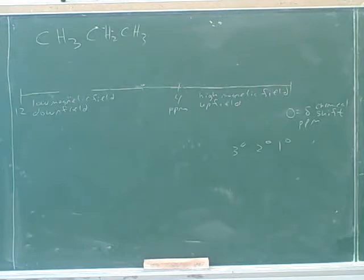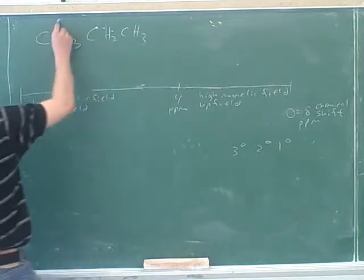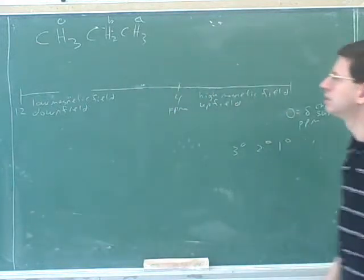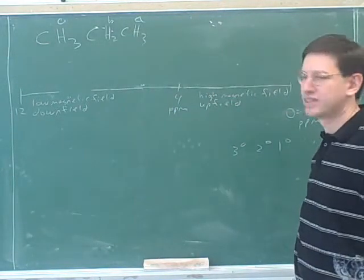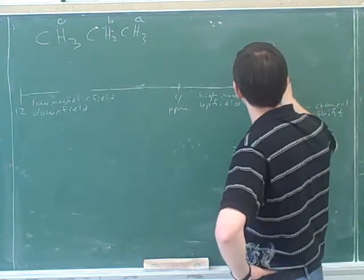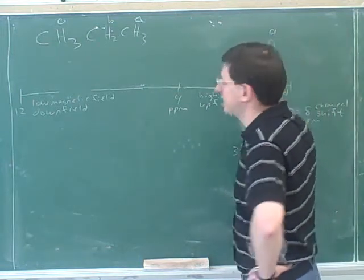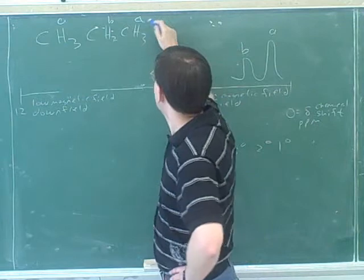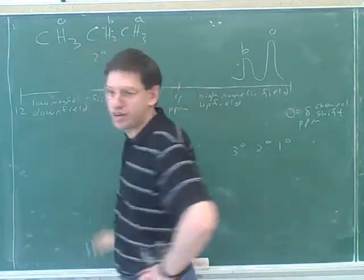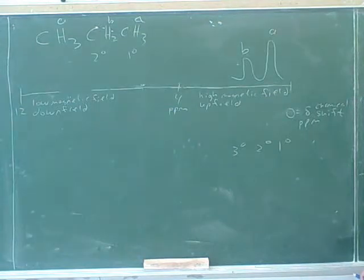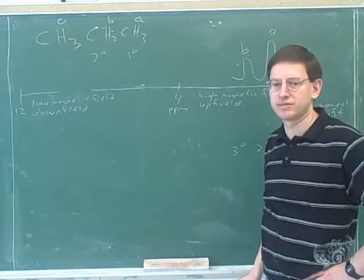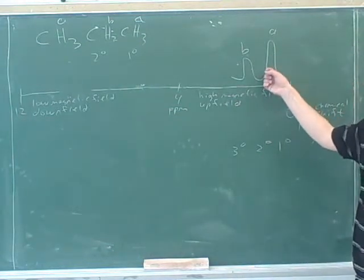For example, how many peaks would you expect here? Two. And who's going to be further to the left — the A peak or the B peak? The A peak would be further to the right. The A hydrogens are on a primary carbon, whereas the B hydrogens are on a secondary carbon. Therefore, the B hydrogens should be a little bit to the left — it's not a big difference, but the B hydrogens are a little bit to the left compared to the A. So, roughly speaking, the printout would look like this.